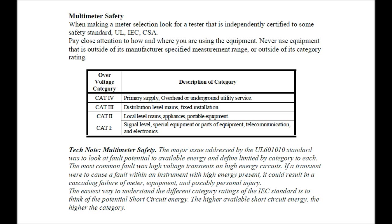CAT 5: primary supply overhead or underground utility service. CAT 3: distribution level mains fixed installation. CAT 2: local level mains appliances and portable equipment. CAT 1: signal level special equipment or parts of equipment — telecommunications and electronics.